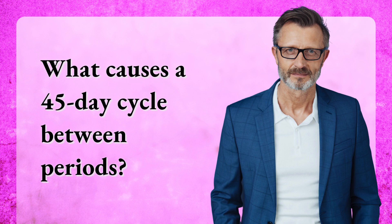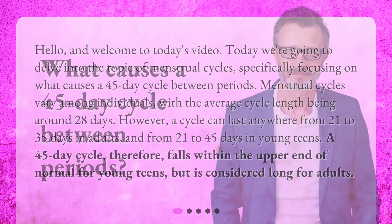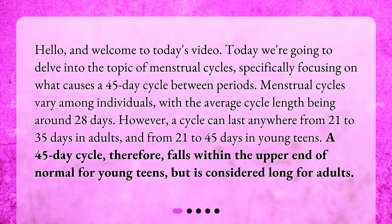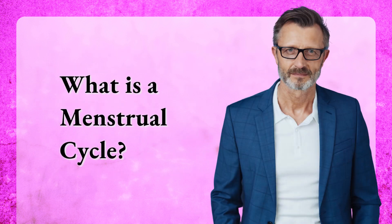What causes a 45-day cycle between periods? Welcome to today's video. We're going to delve into the topic of menstrual cycles, specifically focusing on what causes a 45-day cycle between periods. Menstrual cycles vary among individuals, with the average cycle length being around 28 days. A cycle can last anywhere from 21 to 35 days in adults, and from 21 to 45 days in young teens. A 45-day cycle therefore falls within the upper end of normal for young teens, but is considered long for adults.